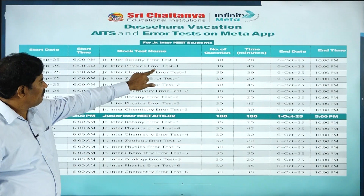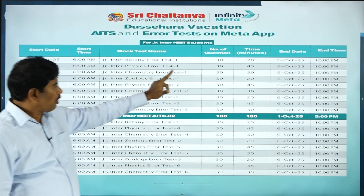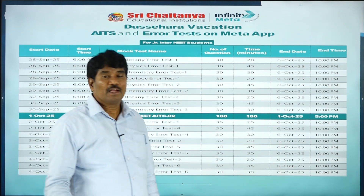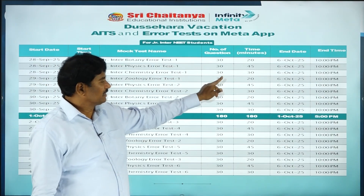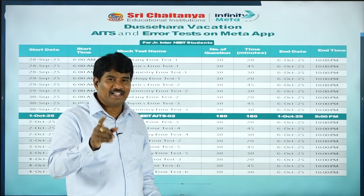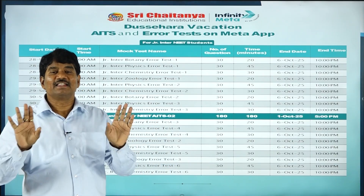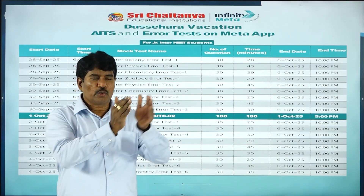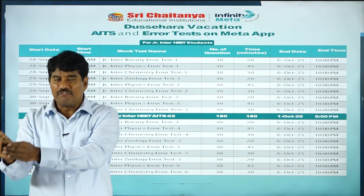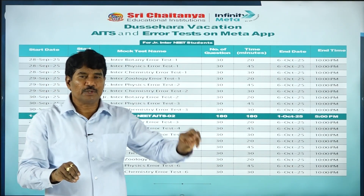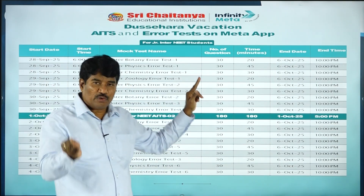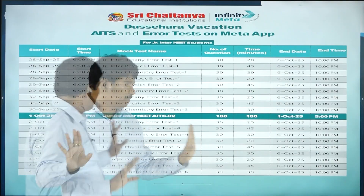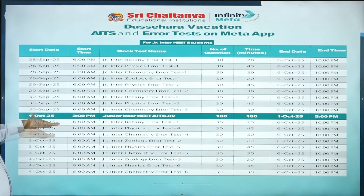On the same day, junior inter Physics error test one — 30 questions, 45 minutes, as numericals are involved. Junior inter Chemistry error test one — 30 questions, 30 minutes. So children, every day we are conducting 3 tests and every test will have 30 questions. From these 30, 15 are questions which you made wrong, and the remaining 15 are similar to the questions you made wrong.